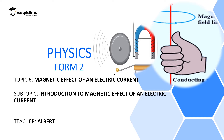Now in this lesson, we are going to discuss the magnetic effect of an electric current, and what we are going to realize here is that for every current-carrying conductor, there is a magnetic field around it. And then later, we are going to discuss how a current-carrying conductor, which has a magnetic field around it, produces a force. And in this topic, we are going to discuss very important electric gadgets like an electric bell, electric motors, microphones, and loudspeakers.